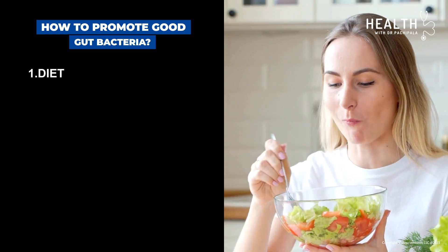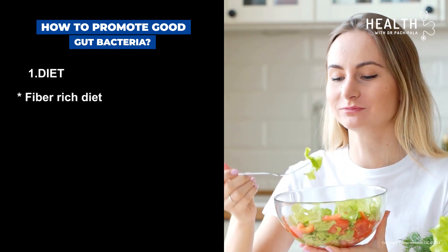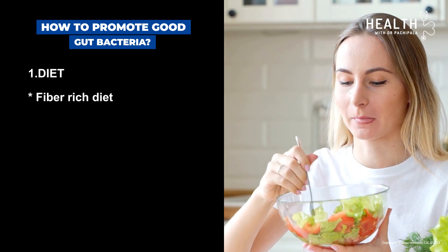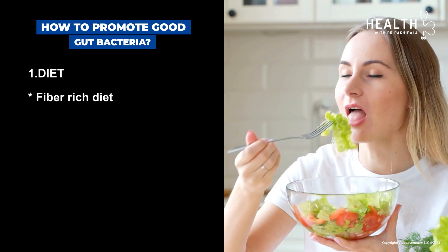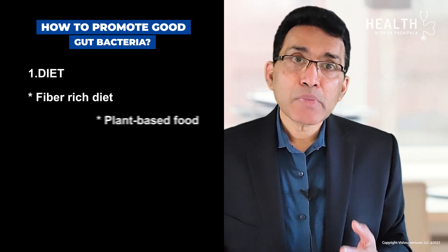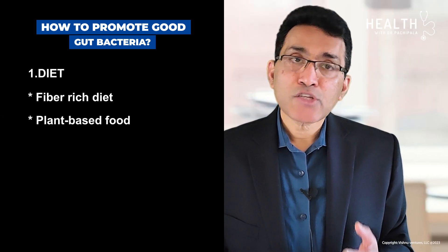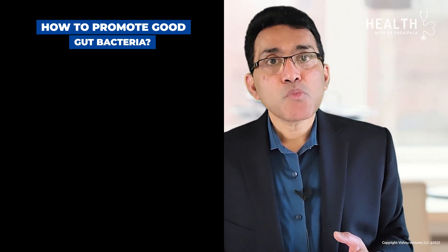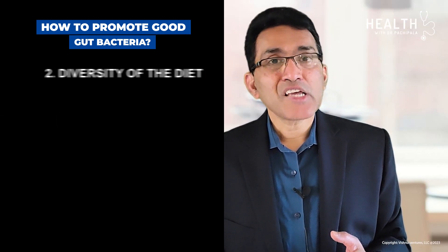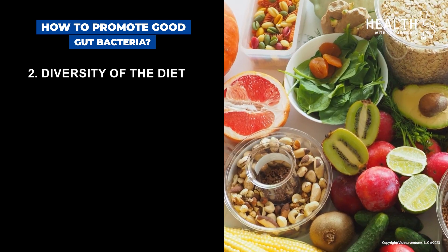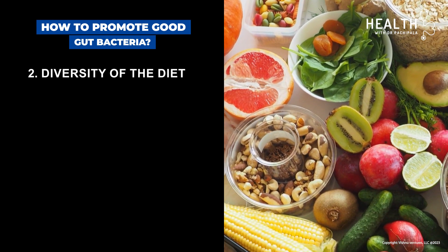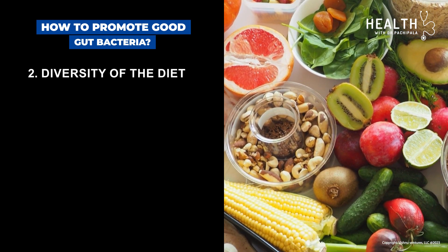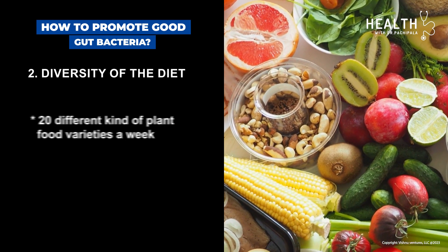The first and most important thing is diet. We should eat a fiber-rich diet, especially food rich in soluble fiber. A plant-based diet is naturally rich in fiber. The second most important aspect of diet is diversity — eating a variety of plant-based products such as fruits, vegetables, nuts, spices, and different kinds of whole grains each week.